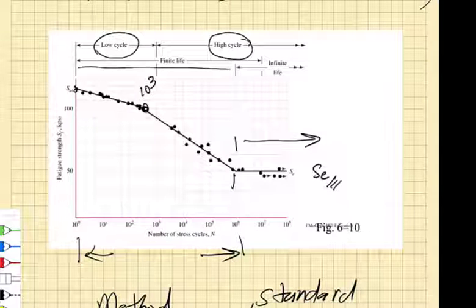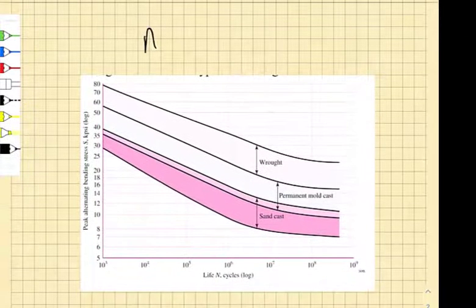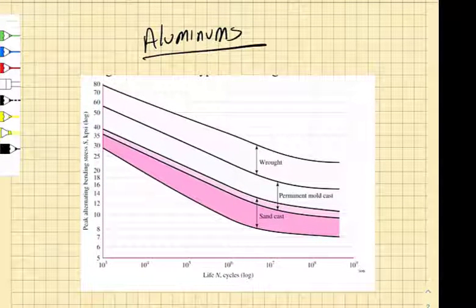Now this endurance limit does not exist for all materials. For ferrous materials, you will find an endurance limit. For non-ferrous materials, these are aluminums, there is no endurance limit for these materials.